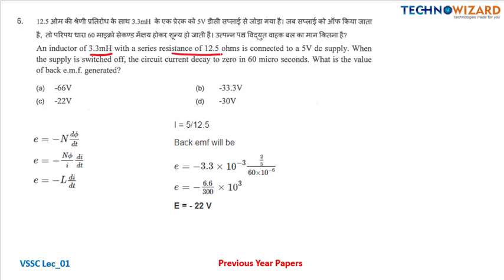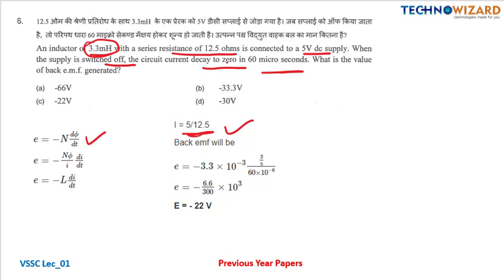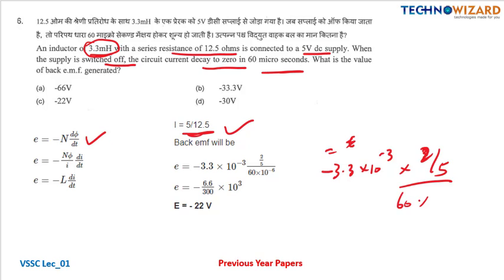An inductor of 3.3 millihenry with a series resistance of 12.5 ohm is connected to a 5 volt DC source. When the supply is switched off, the circuit current decays to zero in 60 microseconds. What is the back EMF generated? E equals minus L times di/dt. L is 3.3 into 10 to the power minus 3, current is 5 divided by 12.5, and time is 60 into 10 to the power minus 6. You will get minus 22 volt as the correct answer, option C.